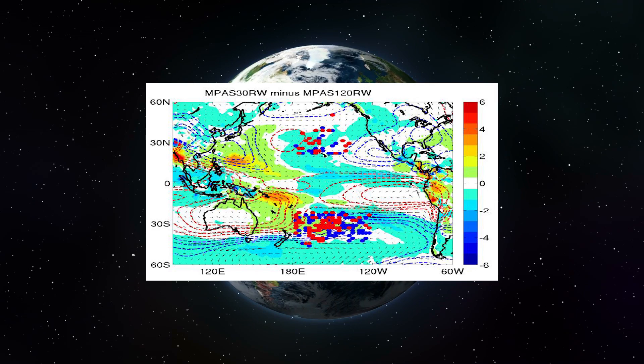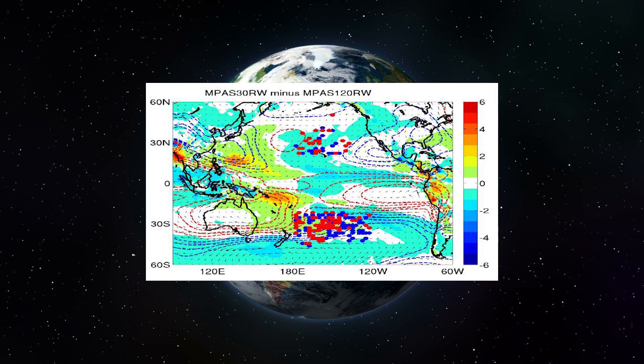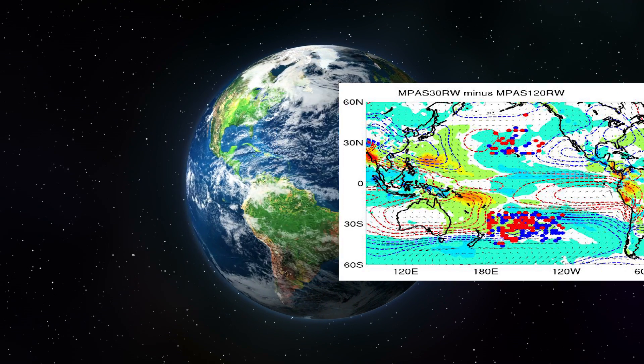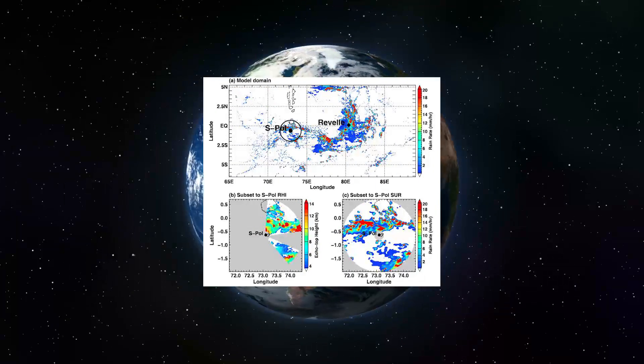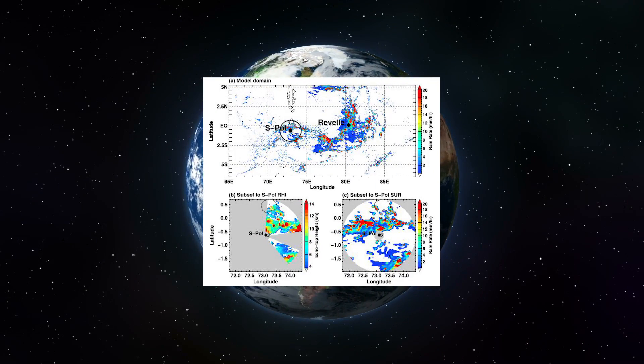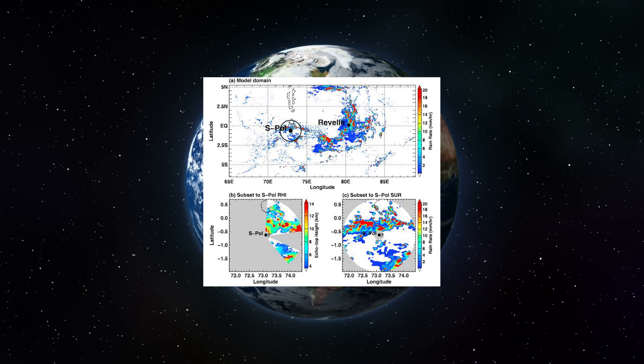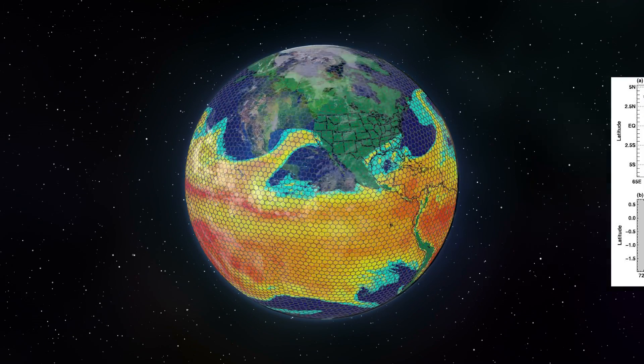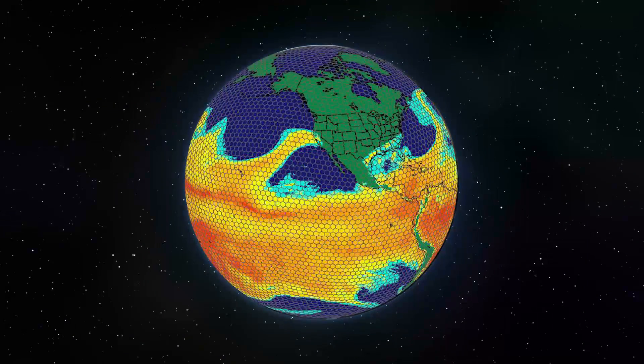Scientists at PNNL are refining predictive models and making discoveries that show how the MJO affects polar vortexes and other extreme events around the world.